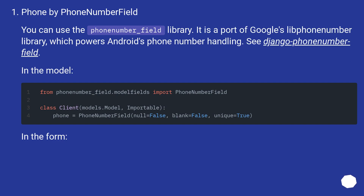You can use the `phone_number_field` library. It is a port of Google's libphonenumber library, which powers Android's phone number handling. See django-phone-number-field — usable in the model and in the form.